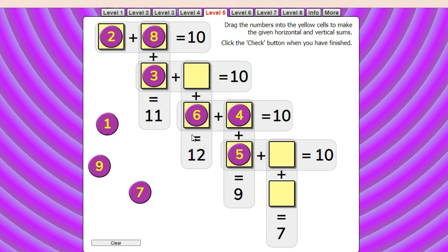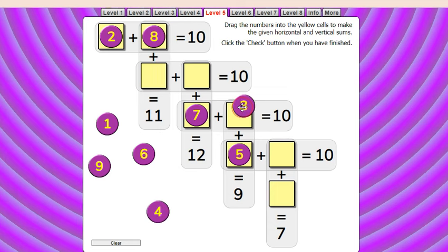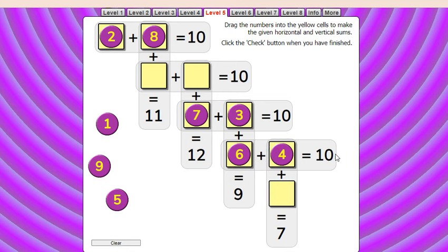Interesting. So let me think of placing seven here and then three here. So seven plus three is ten and three plus six gives me nine. Six plus four is ten and here four plus three is seven. Okay, we have already used three. Mind-blowing. Okay, let us see how we can do this.